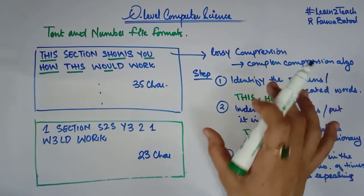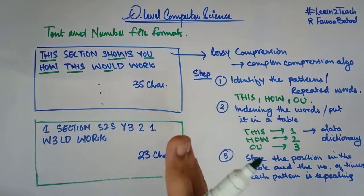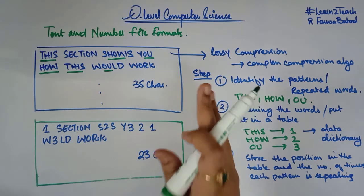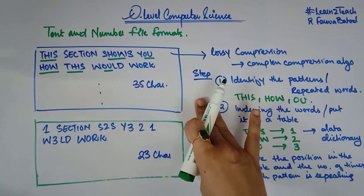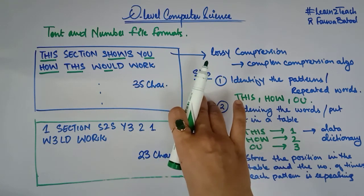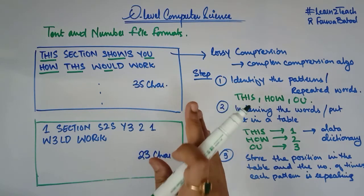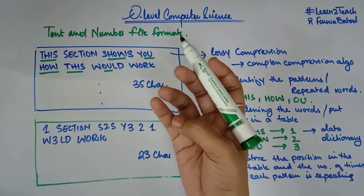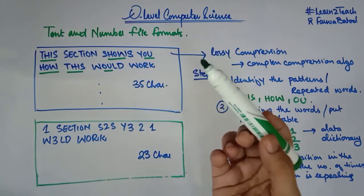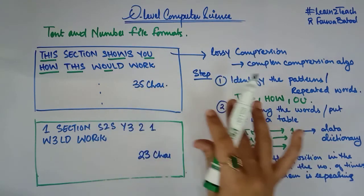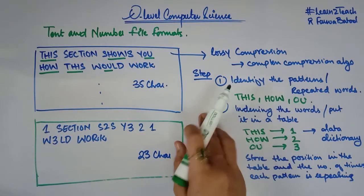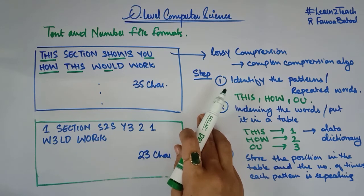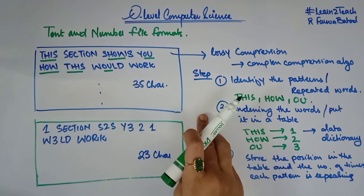We can use this technique effectively to compress files. Thank you for watching — this is how we can do lossless compression for text files and number file formats. If you have any query, comment below. For compression in images and music, please see my videos on JPEG, MP3, and MP4. In the next video we are going to start error correction techniques. Bye bye, take care!